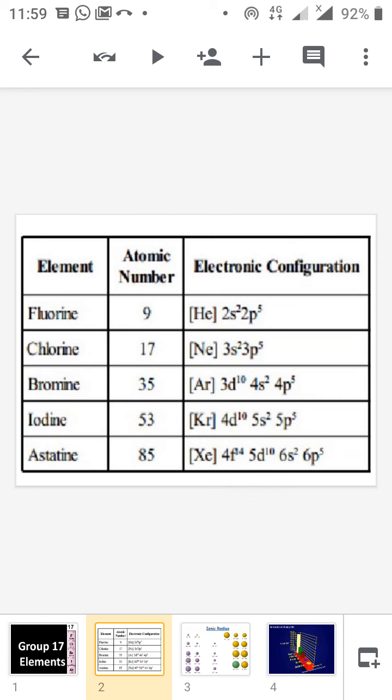First, the general properties of the 17th group start with electronic configuration. Most properties are similar to other elements in other groups. The general electronic configuration of Group 17 is NS2, NP5.